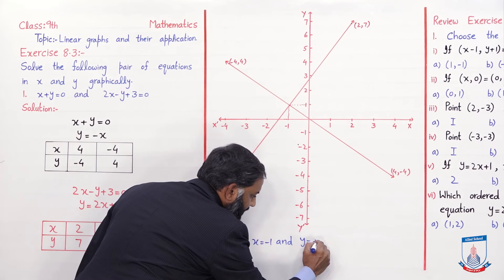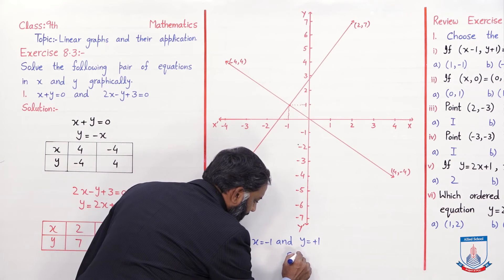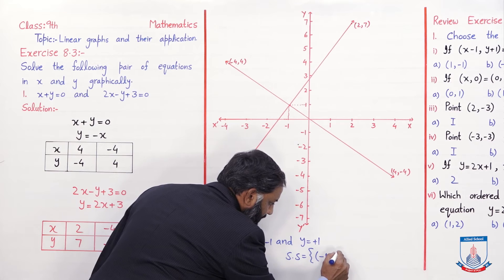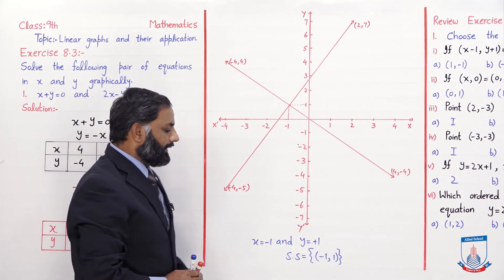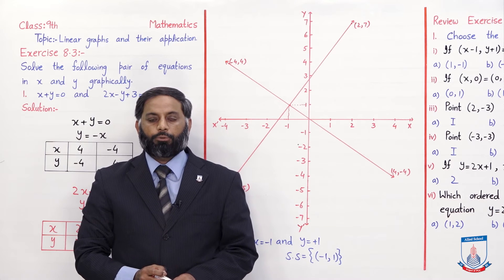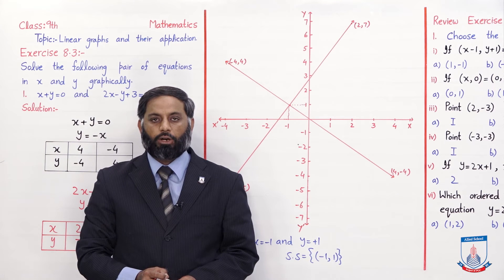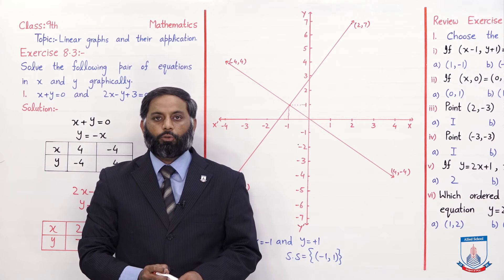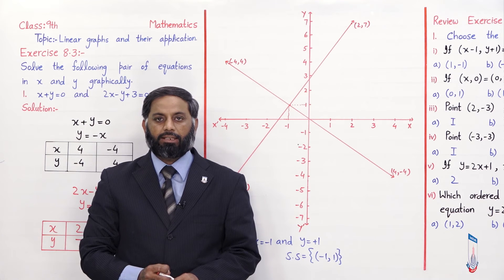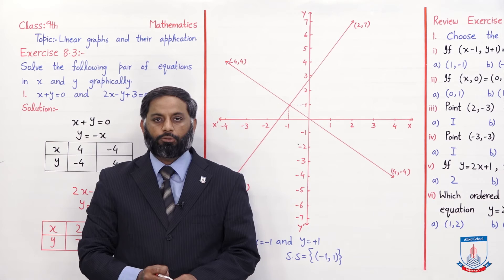x की value -1 है और y की value +1 है, तो x = -1 and y = +1 यह इसका solution होगा। Solution में आप लिखेंगे (-1, 1)। यह students method है — जब भी दो equations given हों और graphically solve करना हो, दोनों equations की lines draw करें। जहां दोनों lines intersect करें, उस point को measure करें — x और y की values वहां से मिलेंगी। Graph पे बनाएंगे तो और आसानी से lines draw होंगी।